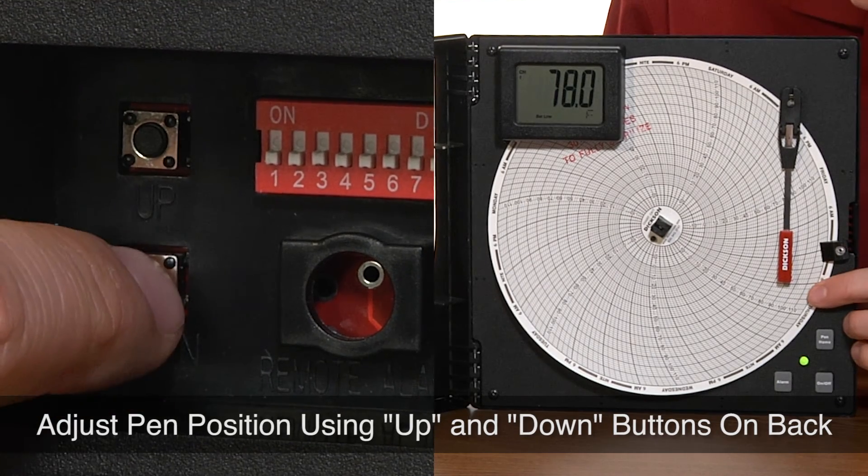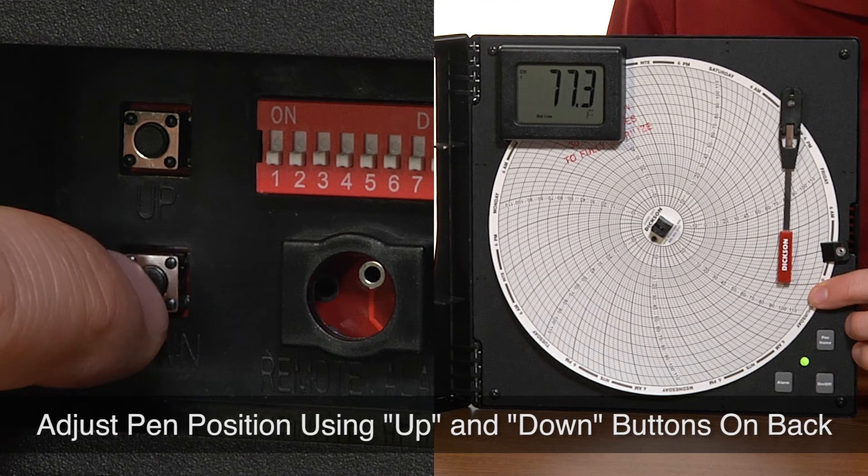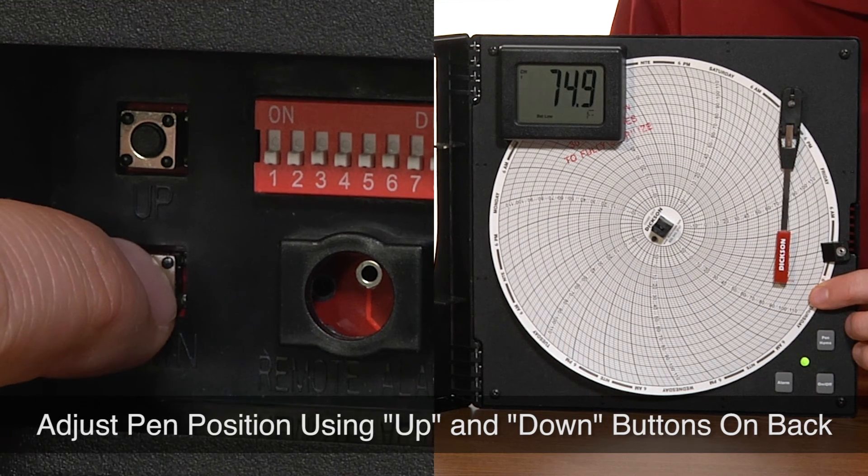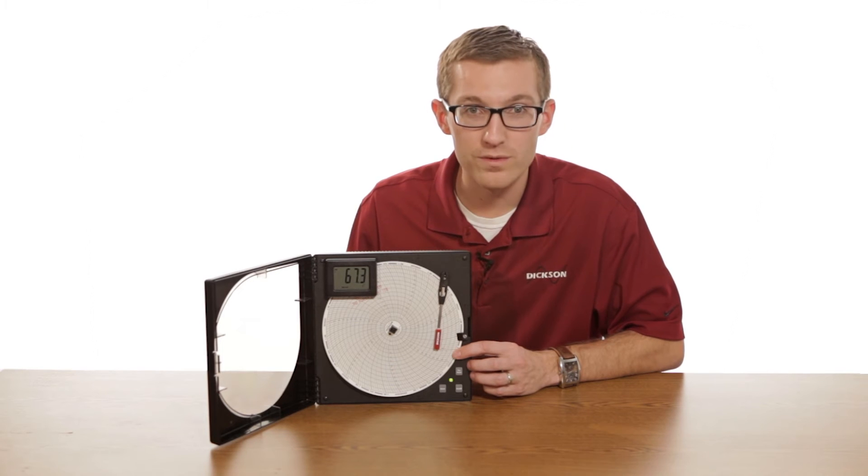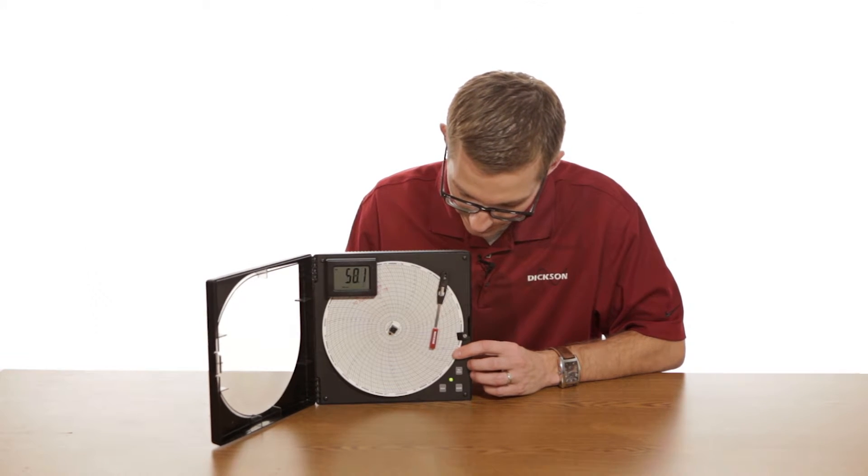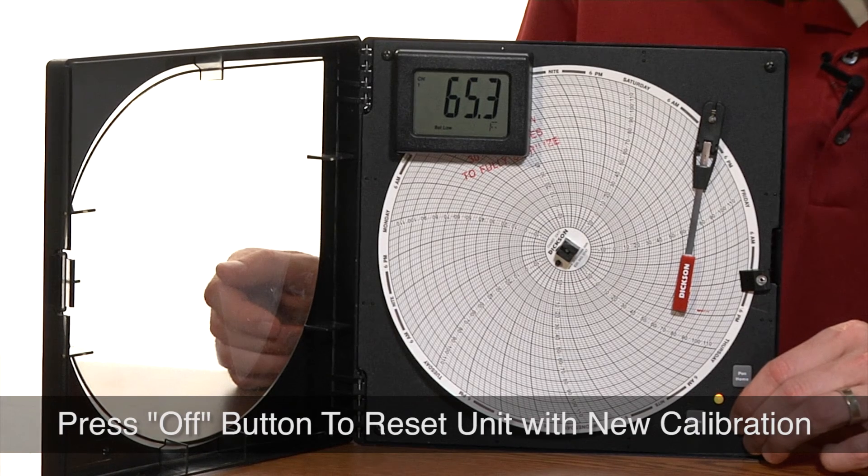In this situation, I'm going to hold down the down button and the pen after a little bit here is going to move. As you can see, it's moving down temperature and holding it down will make it move a little bit further. When you're done, you release the down button. So if that's the appropriate temperature that you're at...